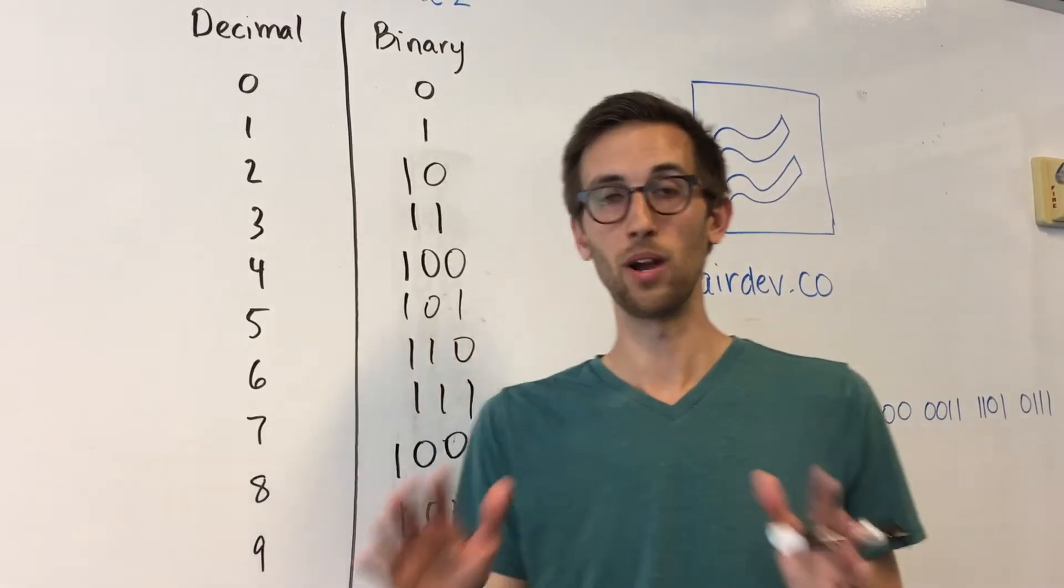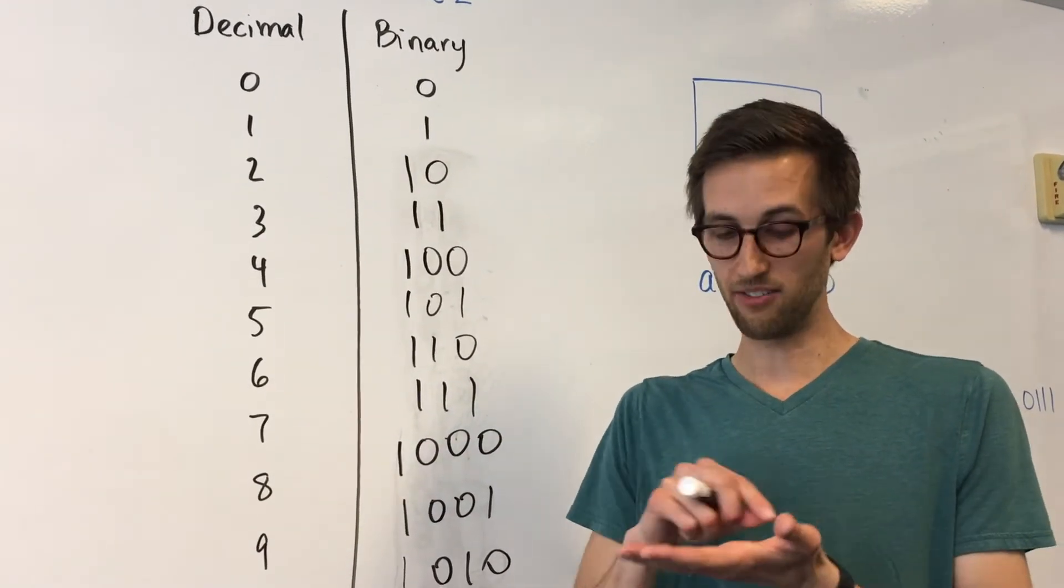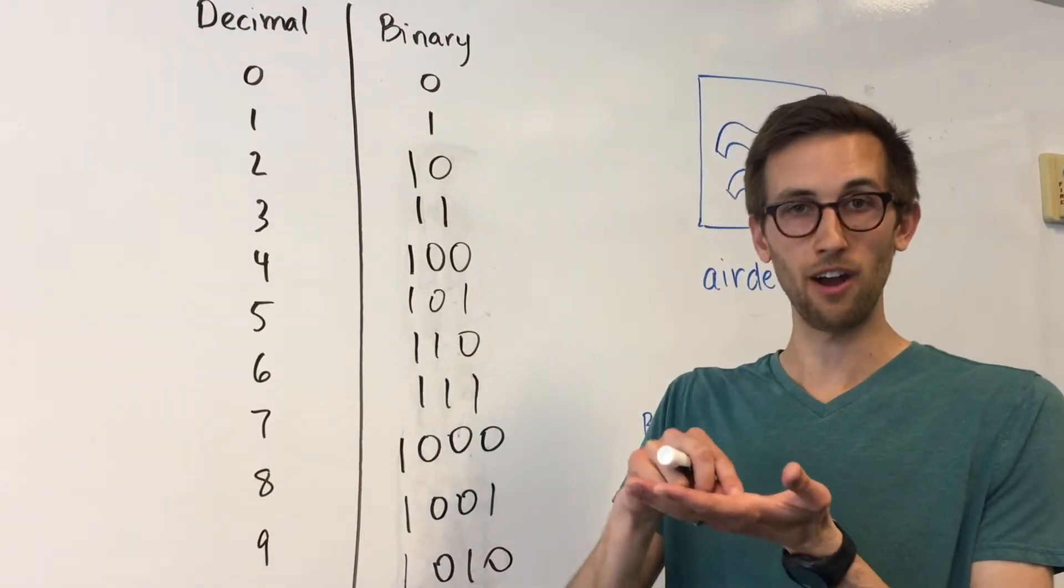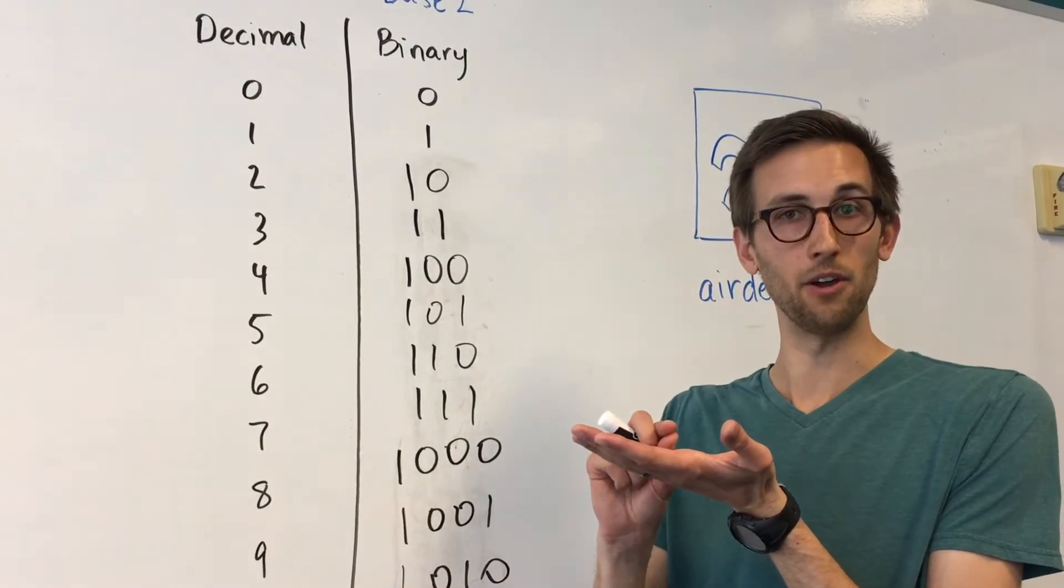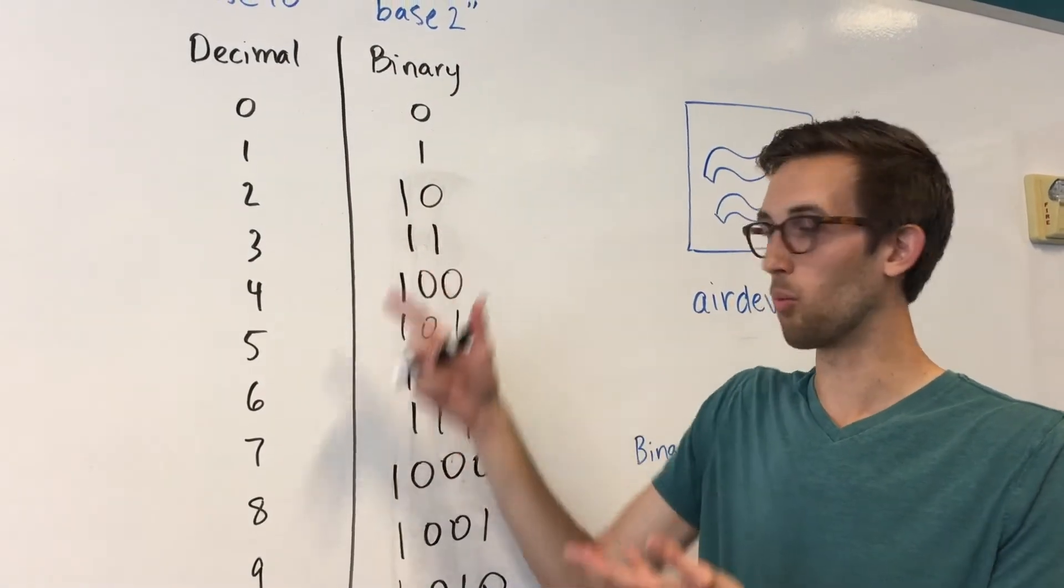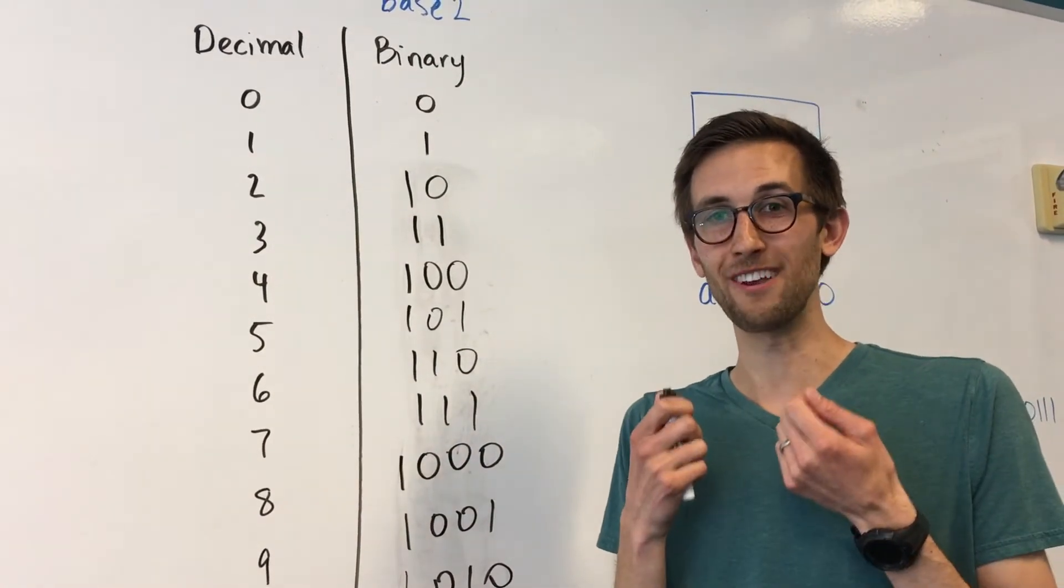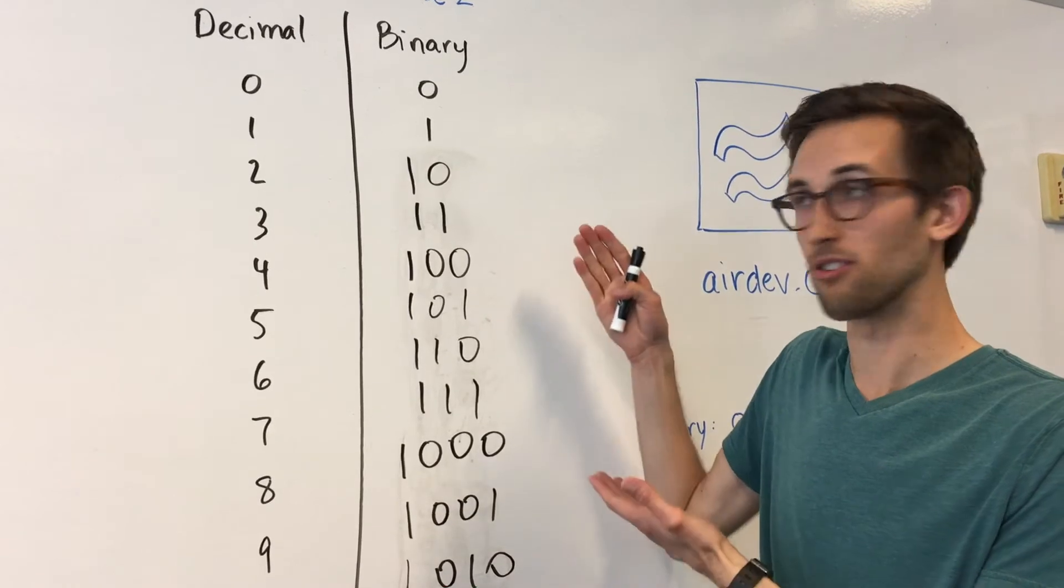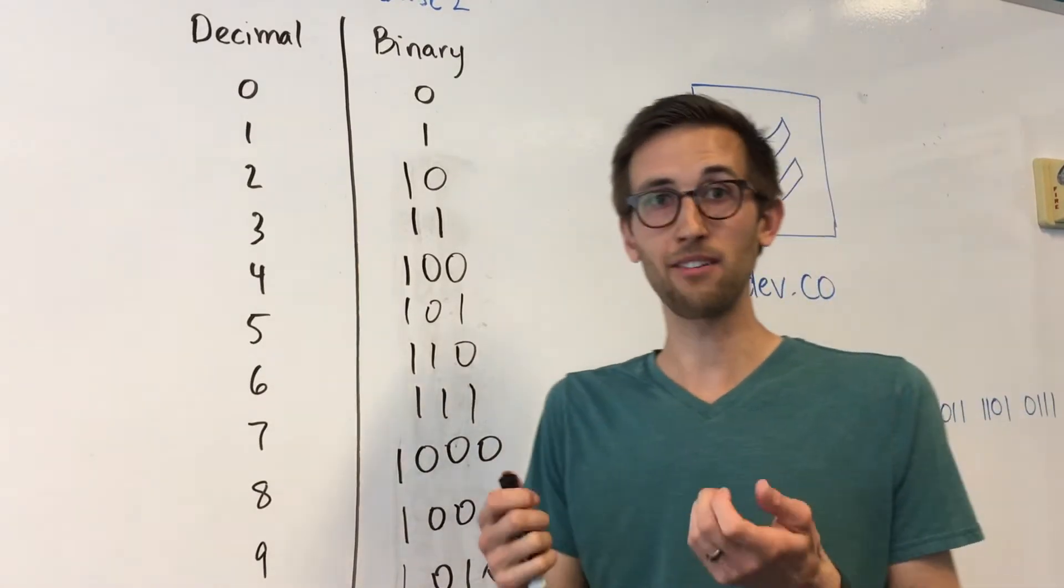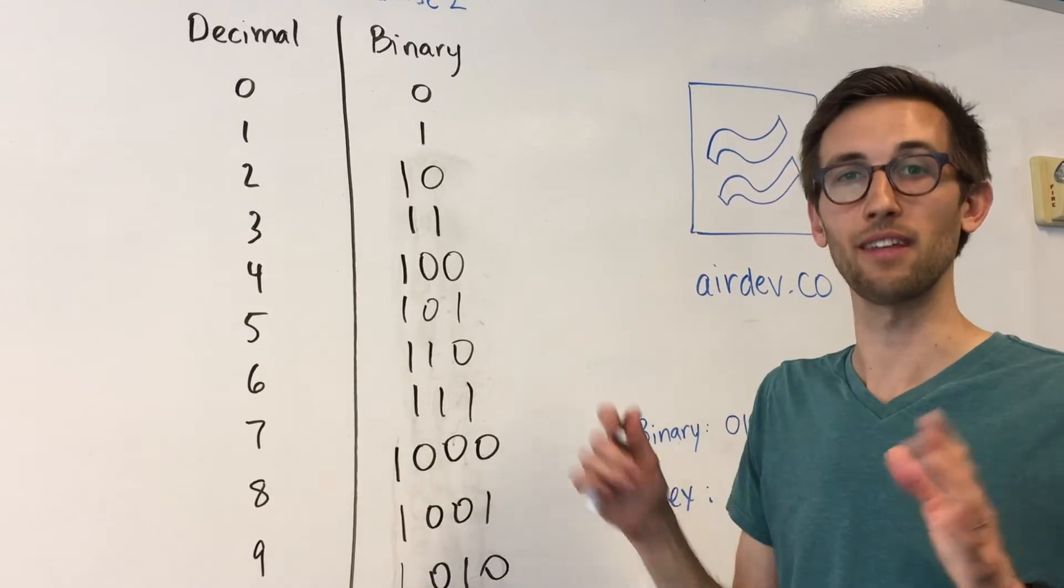So why does a computer do ones and zeros? Why can't it do this base ten? Well the reason is a computer at the very core level is just a circuit board. It's a bunch of these little circuits that can turn on or off. And the way they turn on or off is just by being open where they don't have a current flowing through them or closed where the current can flow through. And so there is no middle ground. There's no one through nine. There's just open or closed. And so at a very physical level the computer needs to express everything it knows in just open or closed. Off or on. So it's really just a practical matter why we use ones and zeros. But it's okay because we can translate them into everything that the computer needs to know.